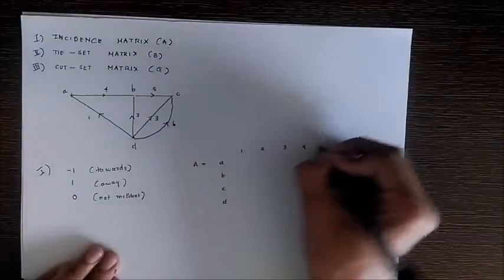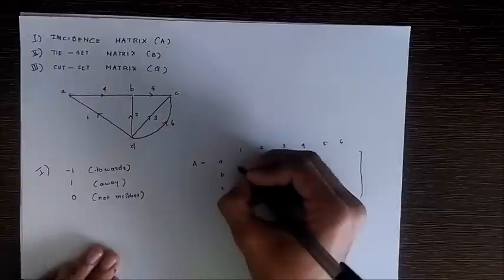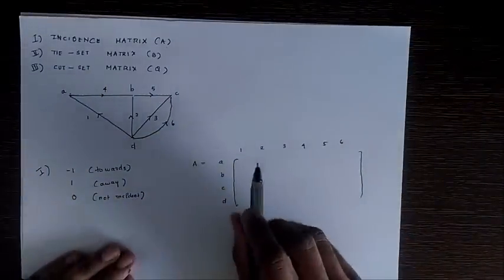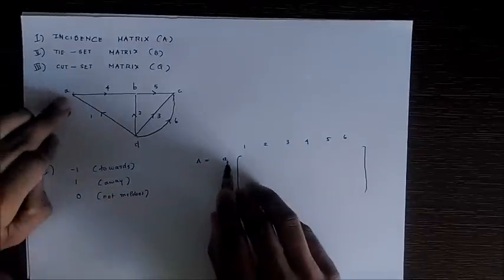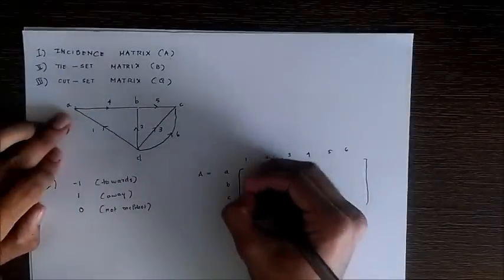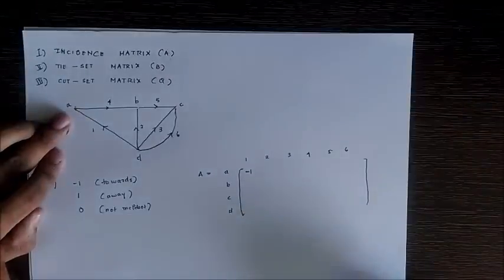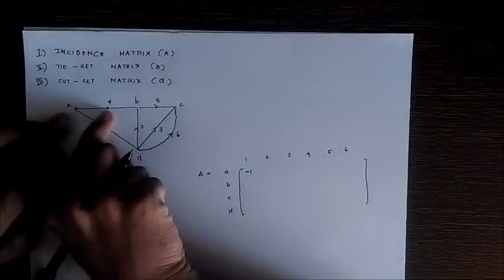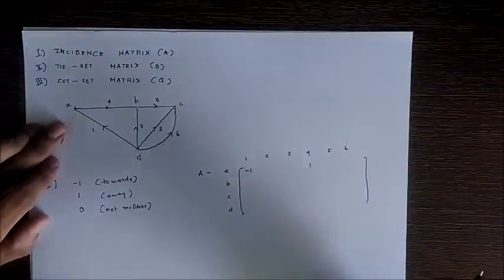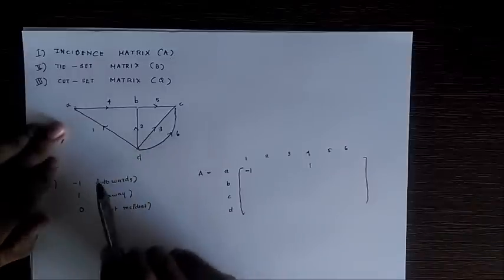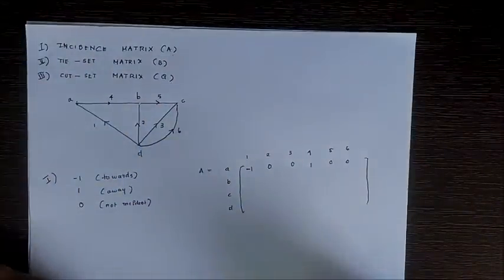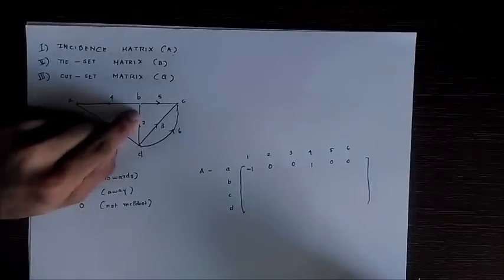So we are going to write the incidence matrix for this graph. For easiness, we write the nodes here and the branches here so that you can easily write the matrix. Now considering the first node A: branch 1 is directed towards it so we give minus one, and branch 4 is incident on it but directed away so we give positive one. All other branches get zero. Now taking node B: branches 2 and 4 are incident towards it, and 5 is directed away.